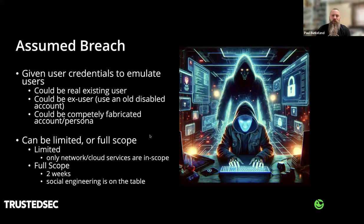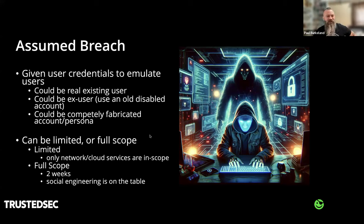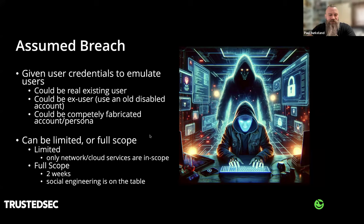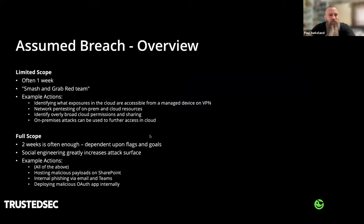Assumed breach is where we're given credentials — it could be an existing user, a token provided by the client, an old re-enabled user account, or a completely fabricated persona. It's easier than ever now to generate fake headshots. The scoping doesn't have to be full scope — it can be limited to network and cloud environments, or full scope with social engineering, which increases the attack surface. For customers more advanced in their cloud journey, we may not have access externally if they have conditional access completely locked down. With a company asset that meets all conditional access requirements, this gives a holistic overview of what we can see in the cloud environment, including misconfigurations that normal end users have access to that maybe the enterprise doesn't want.